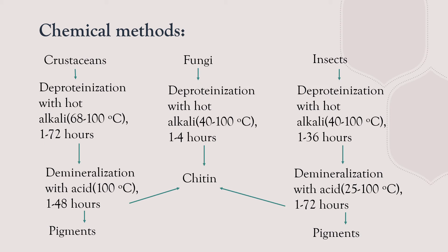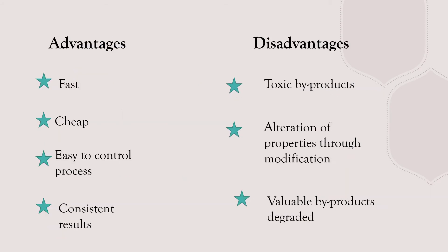The advantages of chemical methods are that they are fast, cheap, easy to control, and results are consistent — all because this is a well-established process we know exactly how to run. The disadvantage is the toxic byproducts: HCl and NaOH react with many things, the byproducts have different properties, and especially the proteins get degraded, which could have been used in several other processes.